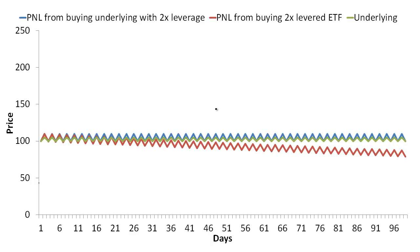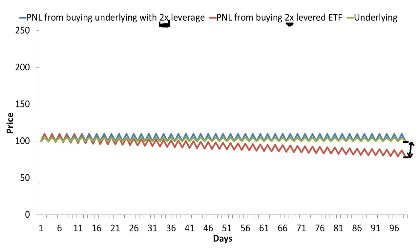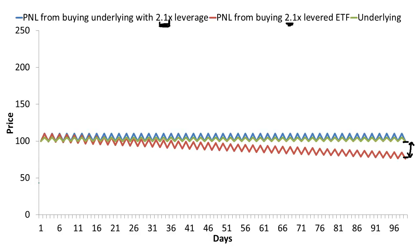Right now we've set this simulation such that the ETFs we're looking at are 2-to-1 levered. With a 2-to-1 levered ETF, the underperformance after 100 days is about that much. I'm going to change this number to see the effect of changing the amount of leverage in the ETF. As I increase the amount of leverage from 2 to 2.1, that discrepancy just increased.